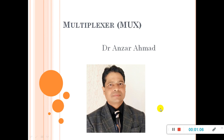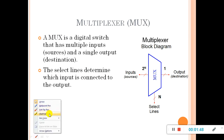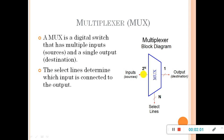Today we are going to take another category of combinational circuits: data transmission. Data transmission circuits are those combinational circuits which help to transmit or receive data. The first circuit in this category is the multiplexer. A multiplexer is a digital switch that has multiple inputs and a single output. It has n inputs and one output only, which is economical because in place of many channels we can use only one channel to transmit one input out of many inputs.